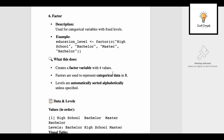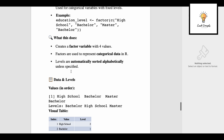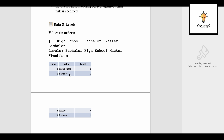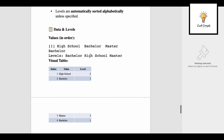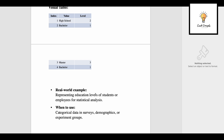The sixth and last data structure is factor, used for categorical variables with fixed levels. To create it: education_level arrow factor, then a vector c('High School', 'Bachelor', 'Master', 'Bachelor'). It creates a factor with four values. Levels are automatically sorted alphabetically unless specified: Bachelor is level 1, High School is level 2, Master is level 3. A real-world example is representing education levels of students or employees for statistical analysis. Use factors for categorical data in surveys, demographics, or experiment groups.